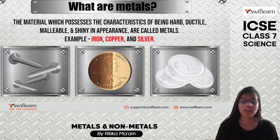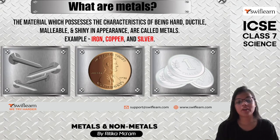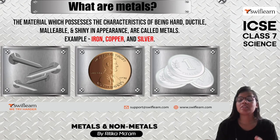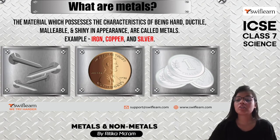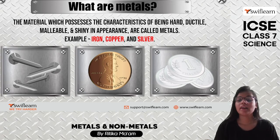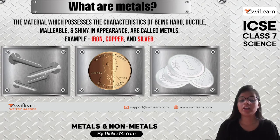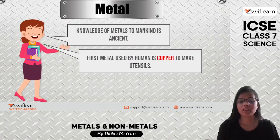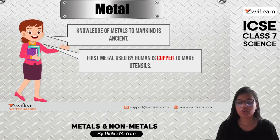Metals are materials which have the distinct characteristics of being hard, ductile, malleable, and shiny in appearance. Examples include iron, copper, and silver. Ductile means the ability to draw a material into wire — for example, copper can be drawn into wire. Malleable means the ability to beat things into thin sheets — for example, aluminium can be beaten into thin sheets. Metals have been known to humans since ancient times, and the first metal used by humans was copper, used to make utensils.